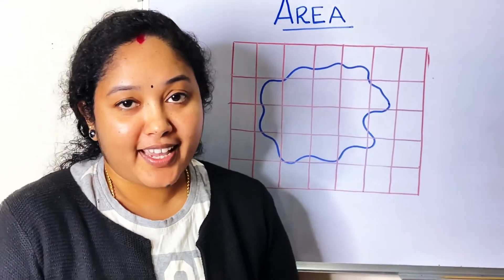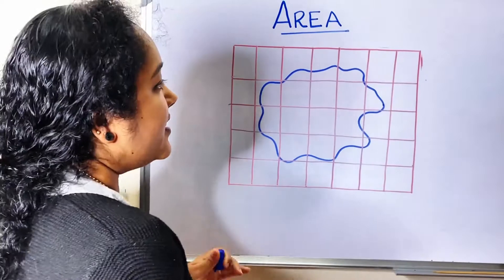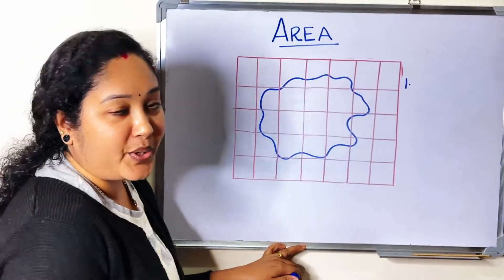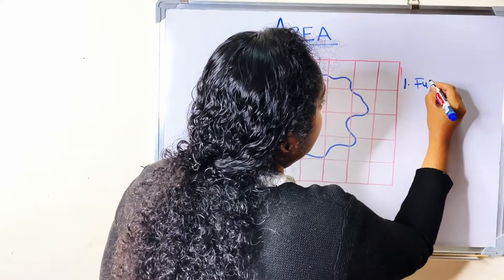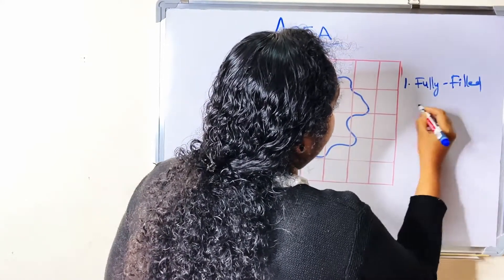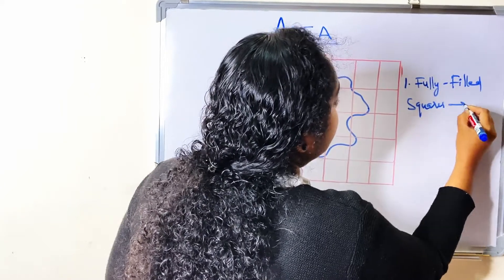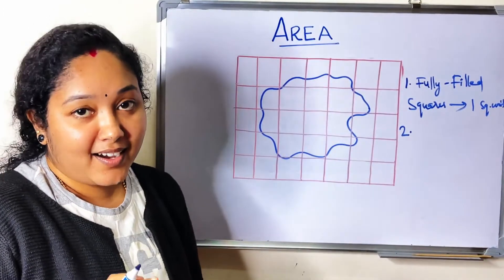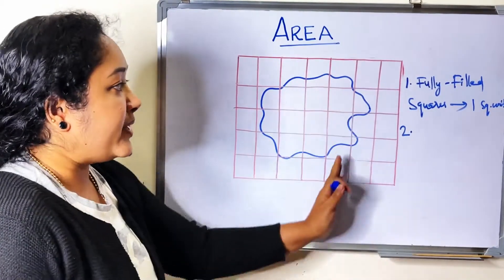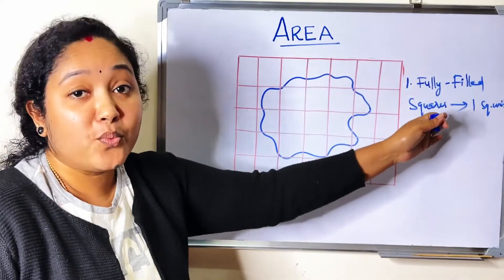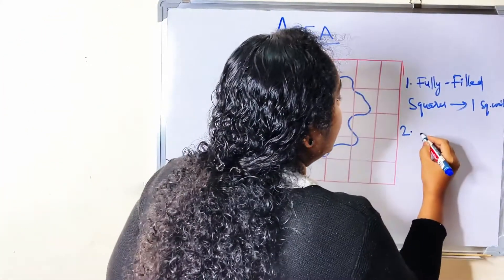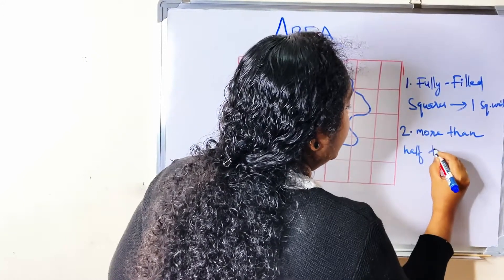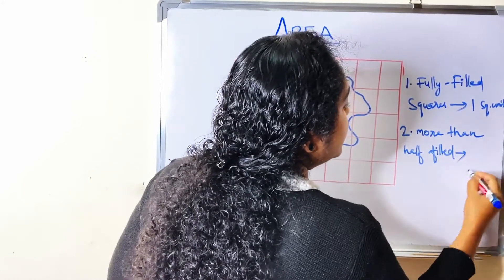The method to find the area of an irregular shape: Rule 1 — fully filled squares are calculated as one square unit. Rule 2 — more than half filled squares are also calculated as one square unit.